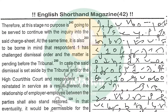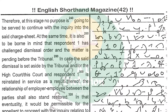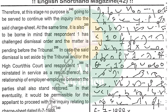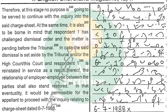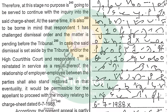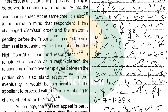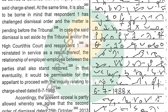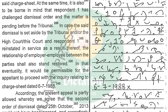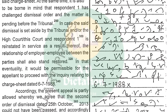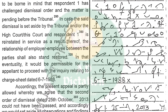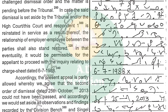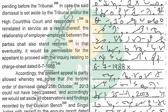At the same time, it is also to be borne in mind that respondent 1 has challenged the dismissal order and the matter is pending before the tribunal. In case the said dismissal is set aside by the tribunal and/or the High Court/this court, and respondent 1 is reinstated in service as a result thereof, the relationship of employer and employee between the parties shall also stand restored. In that eventuality, it would be permissible for the appellant to proceed with the inquiry relating to charge sheet dated 6-7-1988.